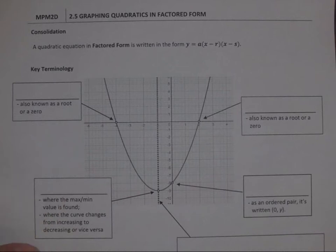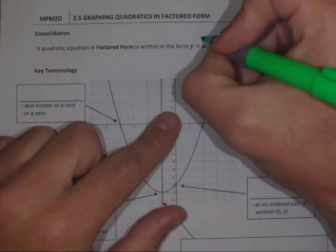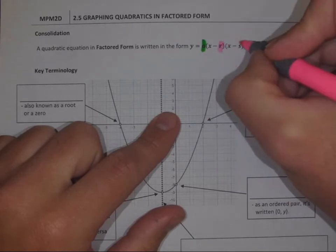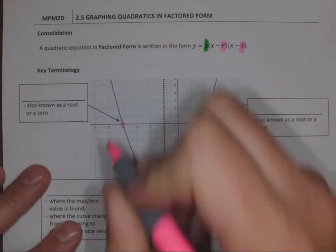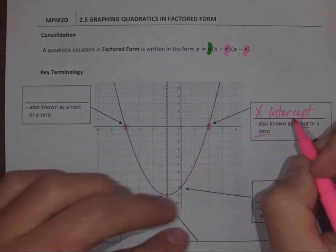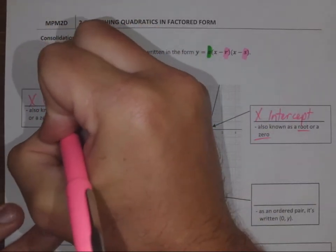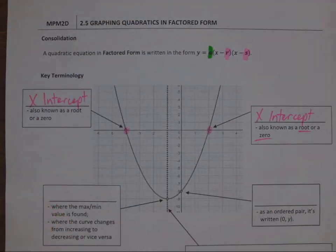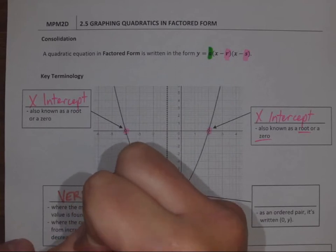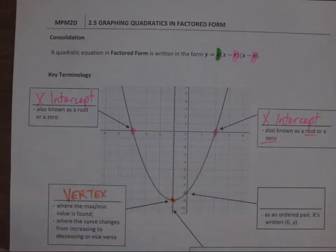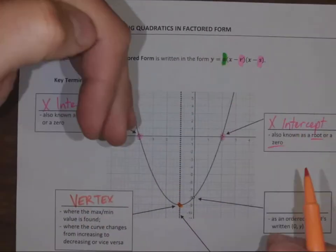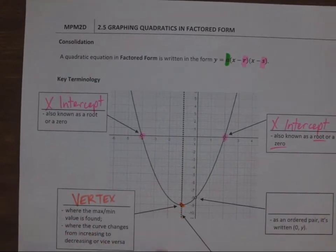In factored form — another way to write a quadratic equation — we still have our a value in front: y equals a times (x minus r) times (x minus s). This gives us our x-intercepts, also known as roots, zeros, or solutions. We also have our vertex, which is where the maximum or minimum is found. If it opens up, we have a minimum; if it opens down, we have a maximum. This is where the curve changes from increasing to decreasing or vice versa. We also find our axis of symmetry here.